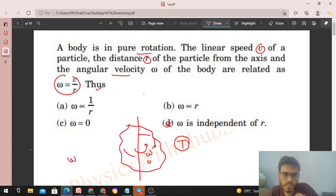But from this equation it appears that omega is inversely proportional to one by r. The correct way to write this equation is: v equals omega into r, because omega is constant, v is a variable, and r is a variable.